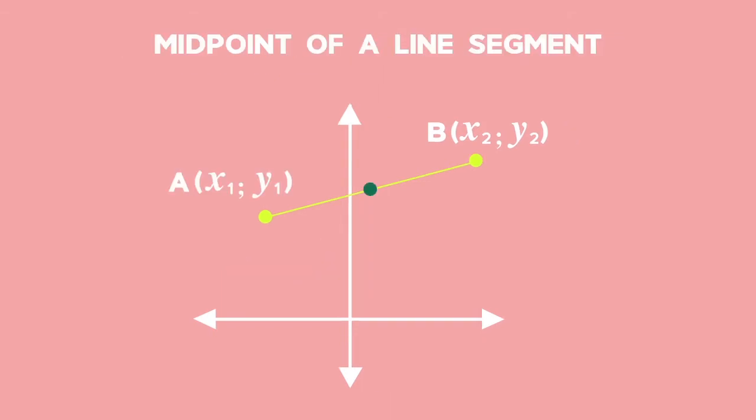To find the midpoint M of a line segment, we add the x values of the endpoints of the line segment and half this value. This gives us the x value of the midpoint. Then do the same with the y values.